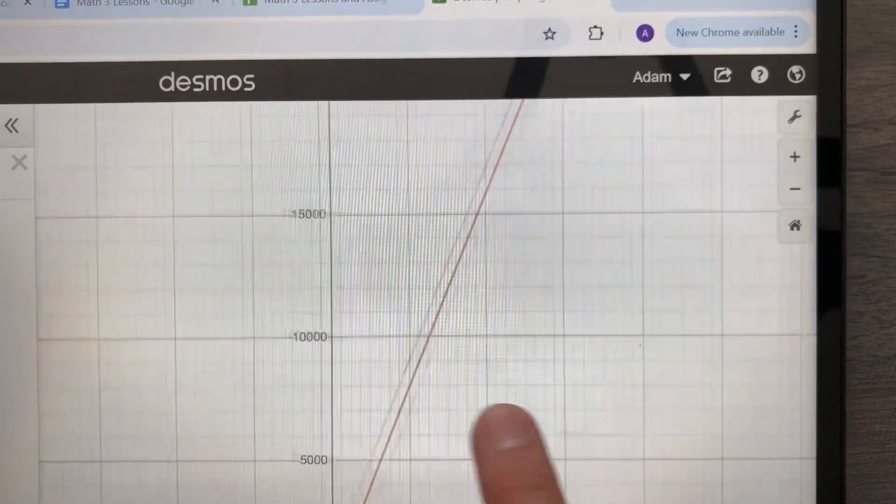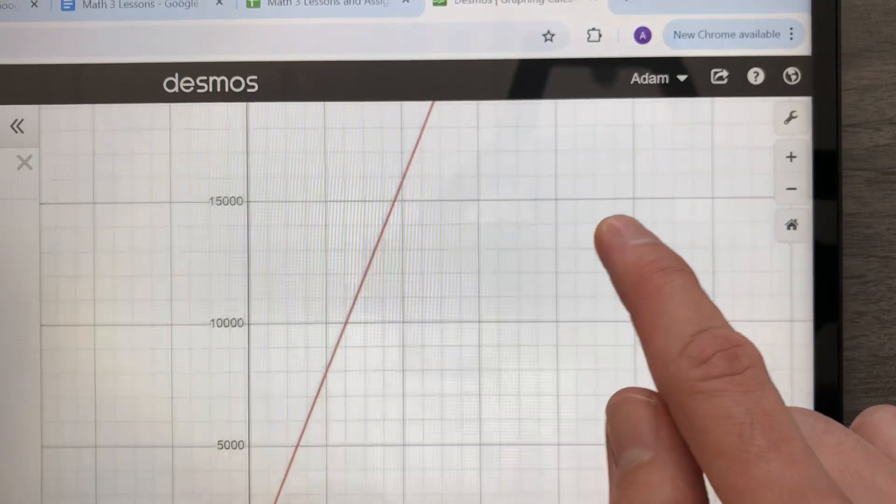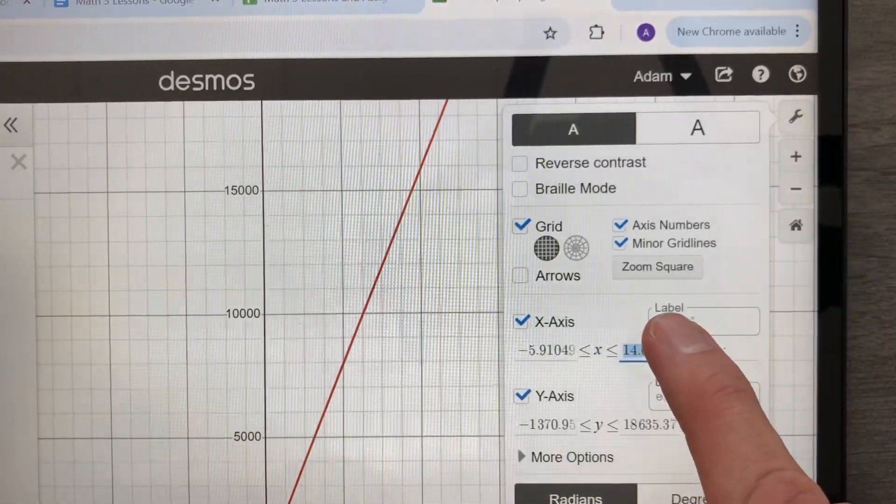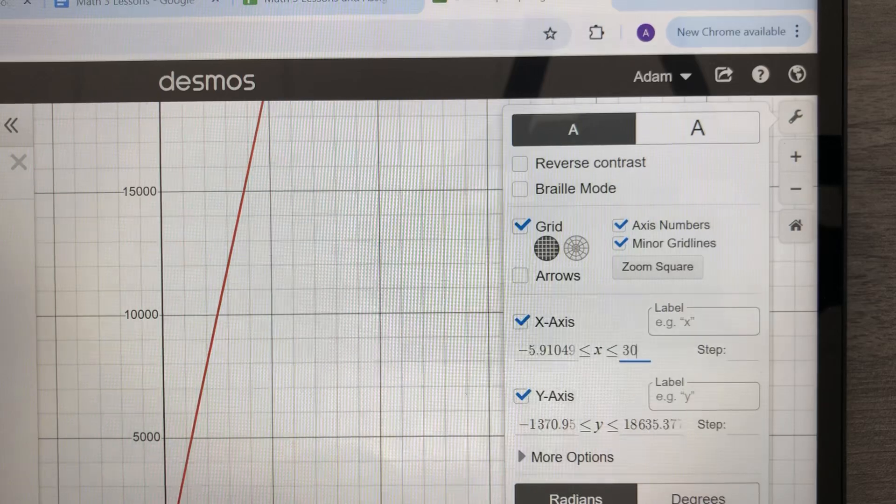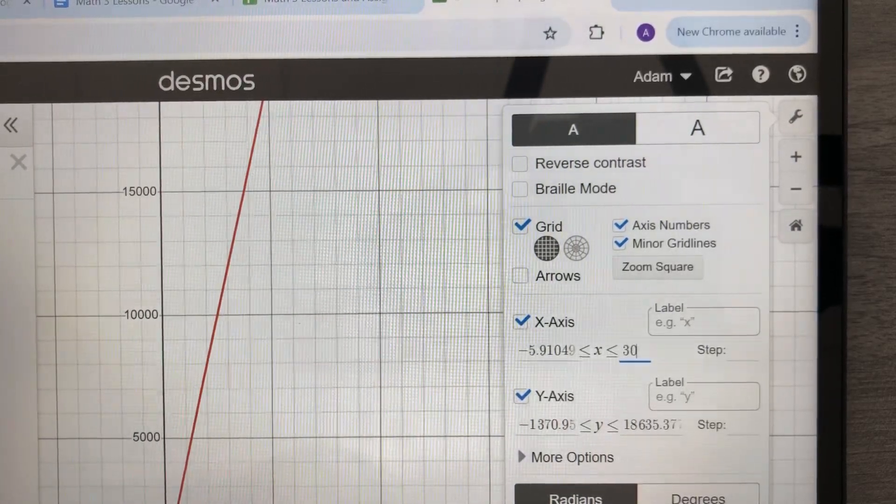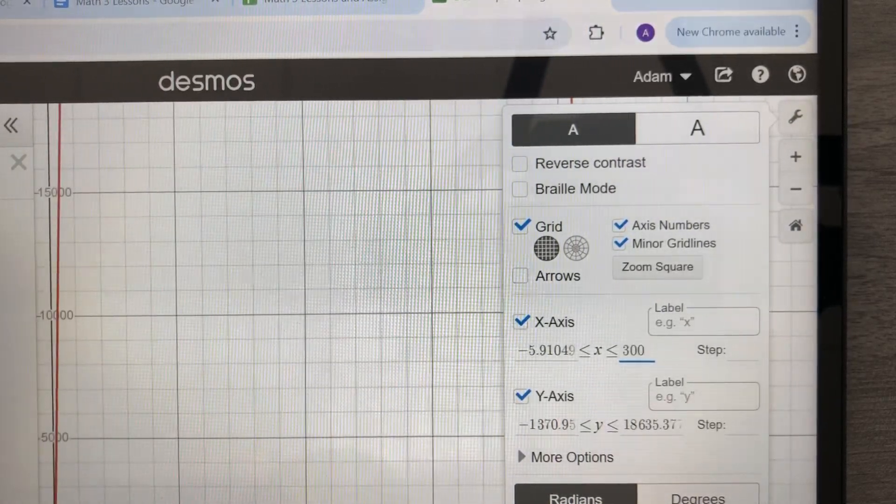Ah, there it is. There. All right. I'm starting to see it. And let's adjust the X's. I can't see enough of them. X should go all the way to 30. It does. I still don't see enough. Let's go to 300. There we go.